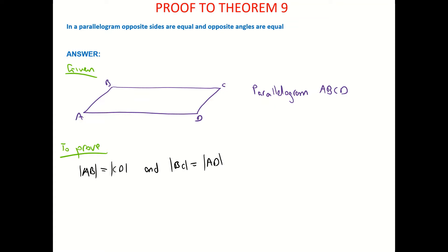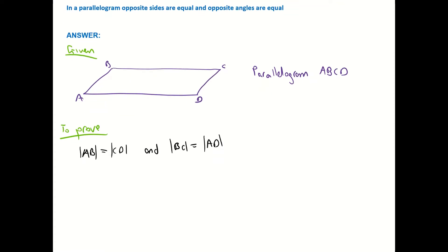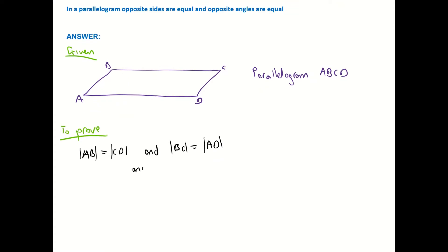And now we want to consider our angles. We want to show that angle A is equal to the size of angle C, and that the size of angle B is equal to the size of angle D. So there are four things that we want to prove here.